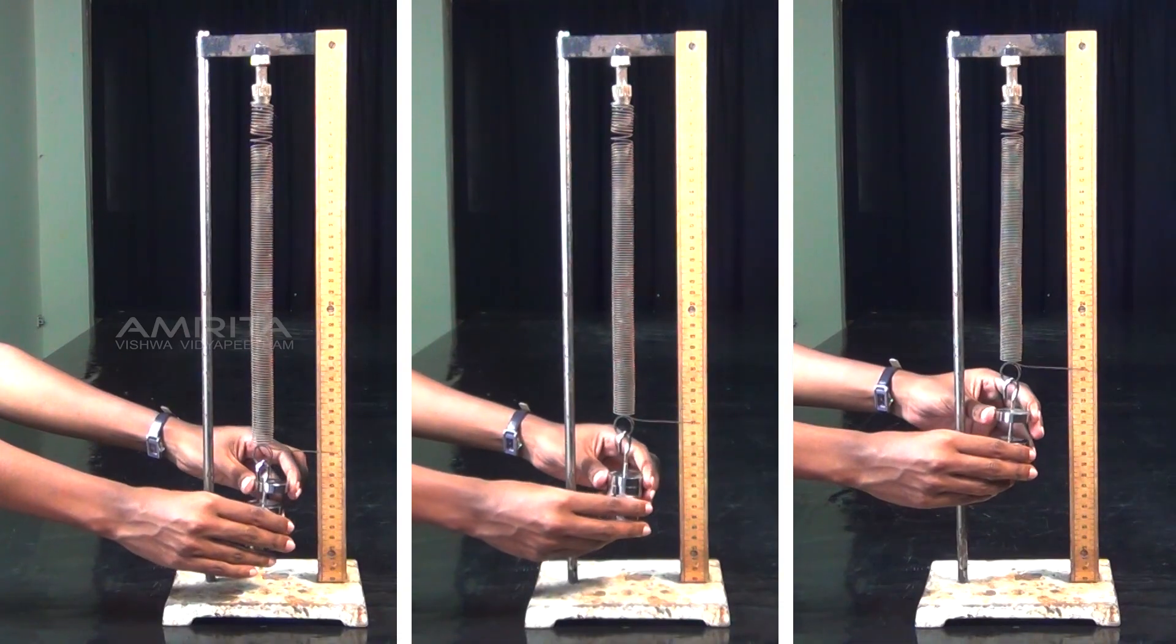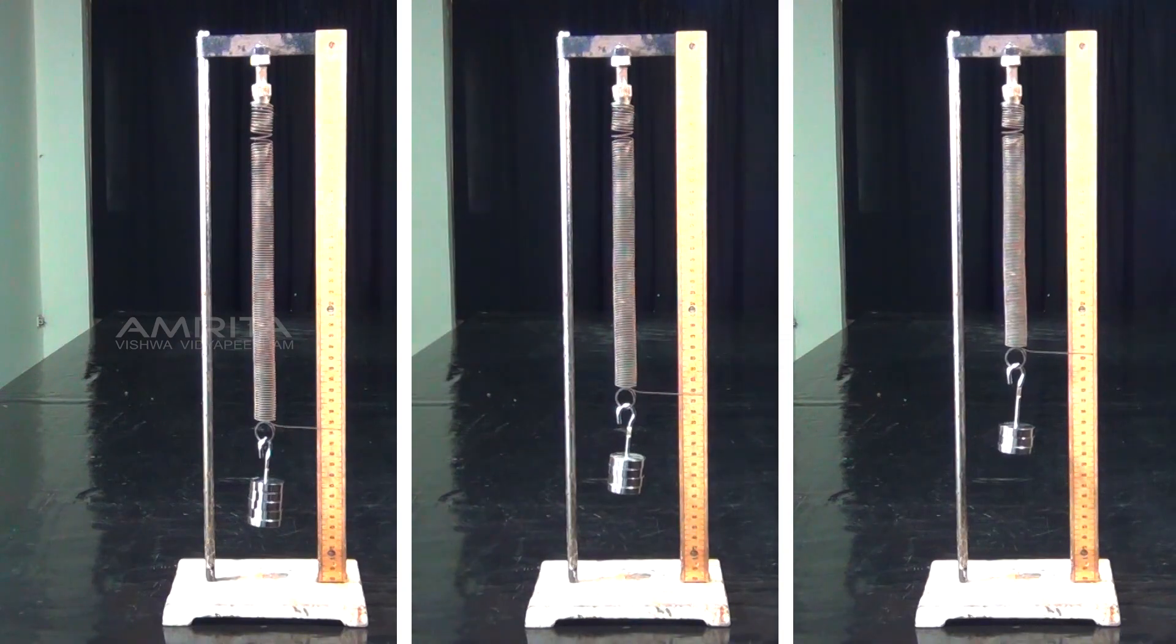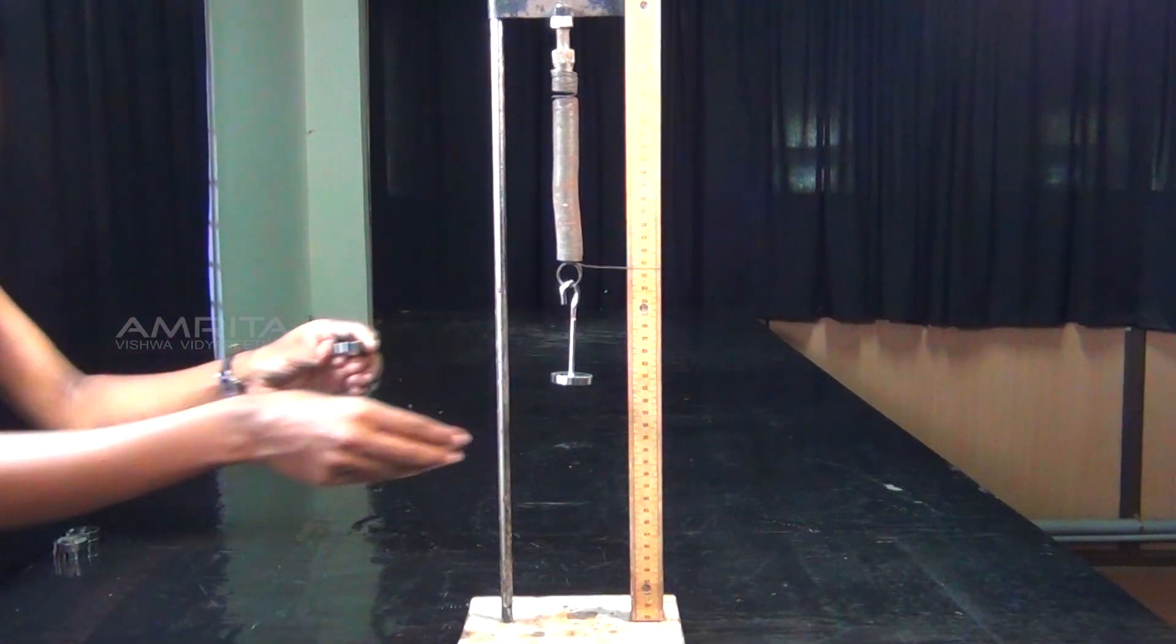Now slotted weights are unloaded one by one and each time the reading of the pointer is noted. Repeat the process till only the hanger is left.